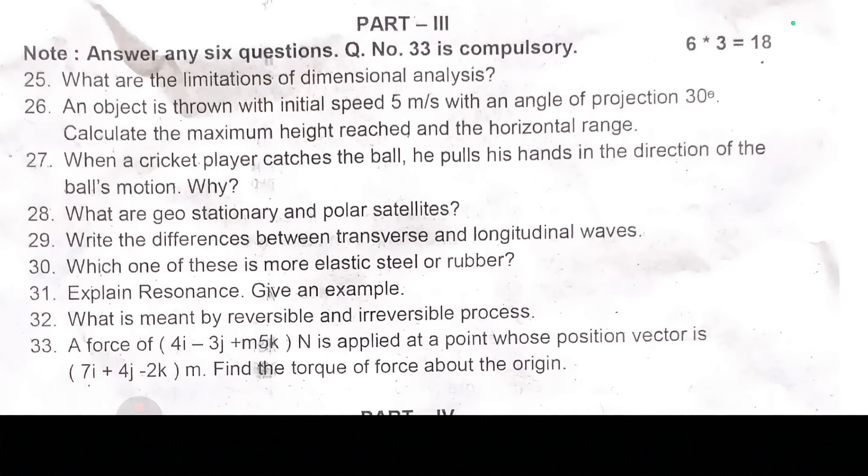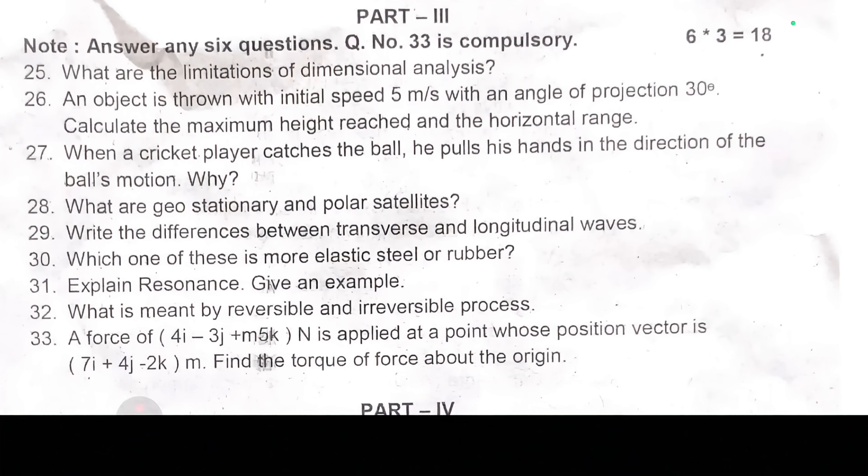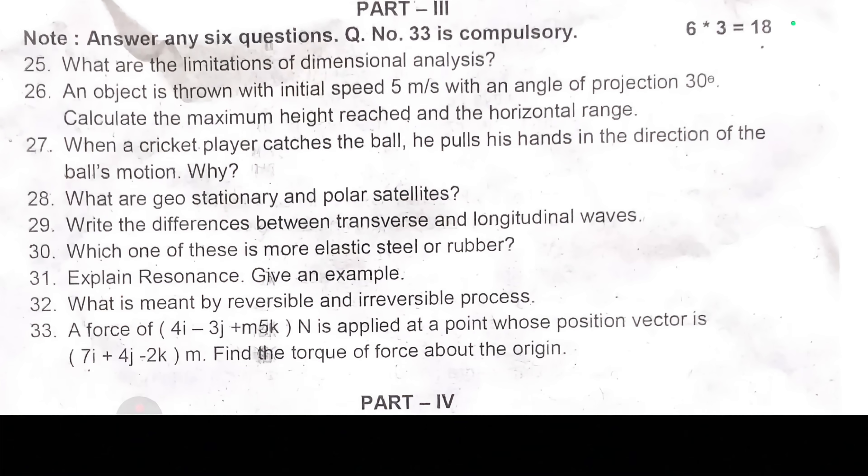Thirty-three, a force of 4i minus 3j plus m5k N is applied at a point whose position vector is 7i plus 4j minus 2k meters. Find the torque of force about the origin.